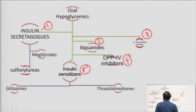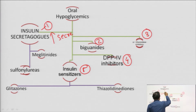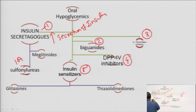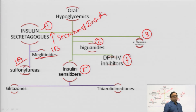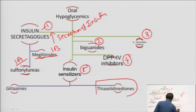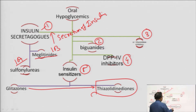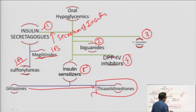Insulin secretagogues are agents that increase the secretion of insulin. They are further subdivided into sulfonylureas and meglitinides. Insulin sensitizers are represented by thiazolidinediones, more commonly known as glitazones. Biguanides, alpha-glucosidase inhibitors, and DPP-4 inhibitors — dipeptidyl peptidase-4 inhibitors — complete the classification.